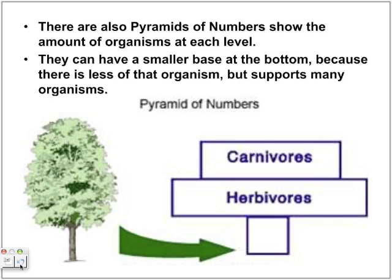There are also pyramids of numbers, which show the number of organisms rather than the energy. Like in this example, there is one tree, and a lot of small herbivores feed off that one tree. And carnivores feed off those herbivores. The tree is a big organism, so it can produce for a lot of other organisms.